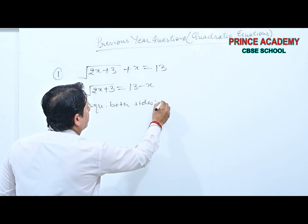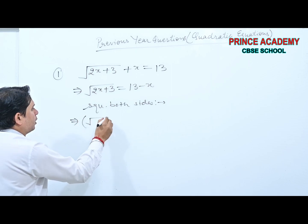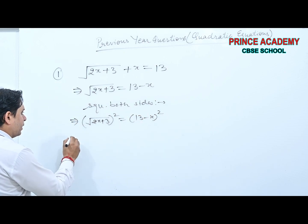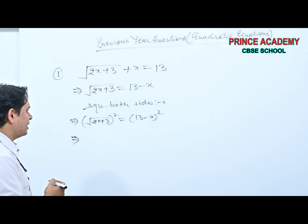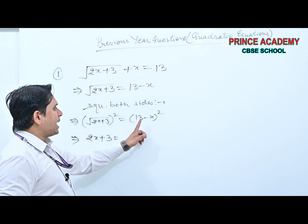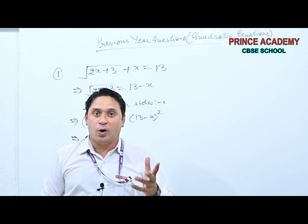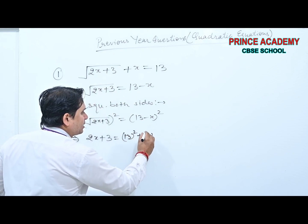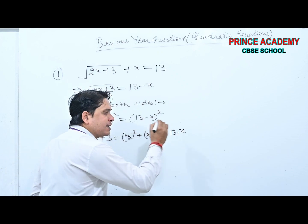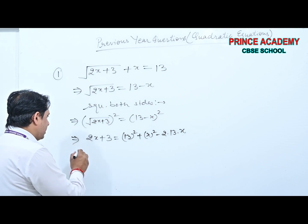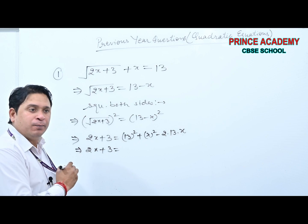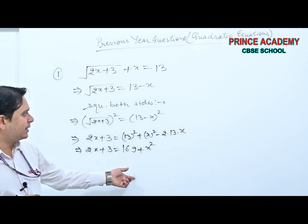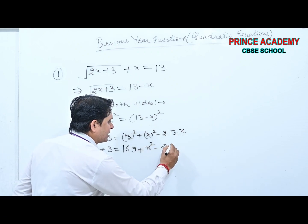Squaring removes the root on the left, giving 2x+3. On the right, (A−B)² = A² + B² − 2AB, so we get 169 + x² − 26x. Shifting everything to the right: x² − 26x + 169 − 2x − 3 = 0. Combining like terms: x² − 28x + ... = 0.